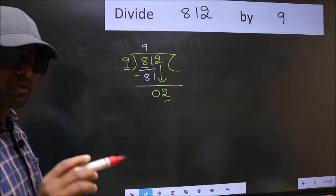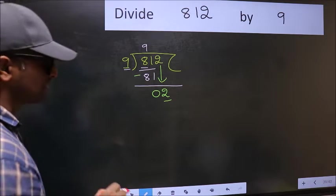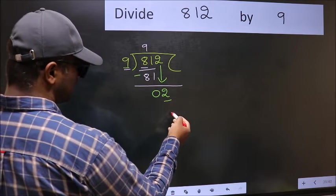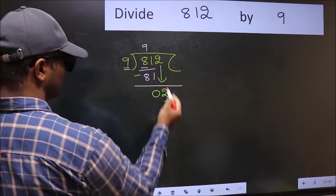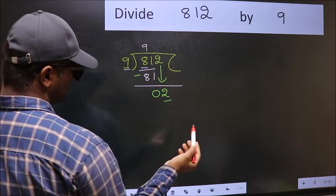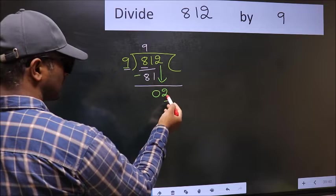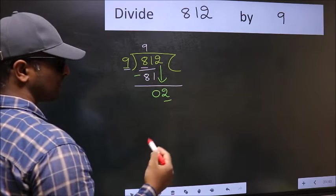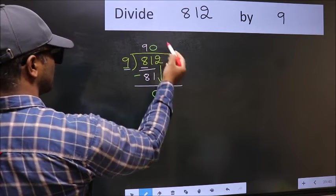Instead, what you should think of doing is, which number should we take here. If I take 1, we will get 9. But 9 is larger than 2. So what we should do is, we should take 0.